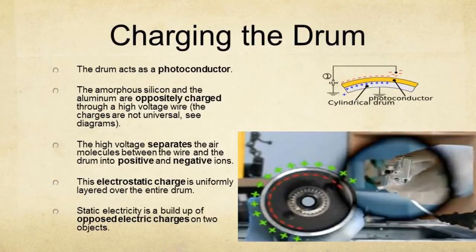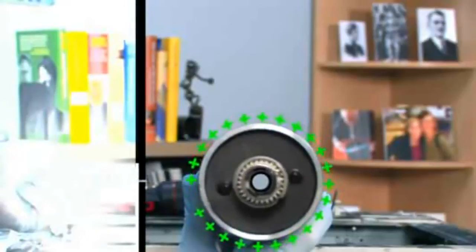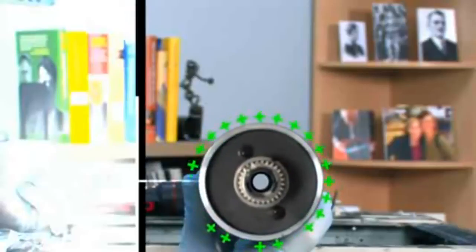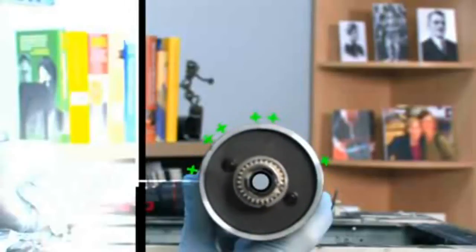The drum acts as a photoconductor and is charged through high voltage wires. The amorphous silicon and the aluminium are oppositely charged. This charge separates the air molecules between the wire and the drum into positive and negative ions. A very bright halogen lamp scans the image. Black areas don't reflect light, but white non-image areas do. When the light strikes the drum, the silicon surface becomes conductive and charge flows away, leaving only a charged image.